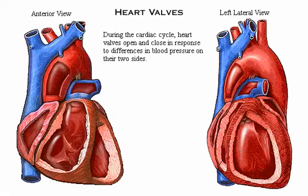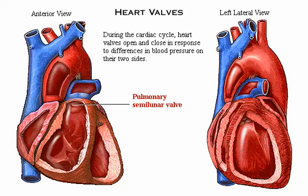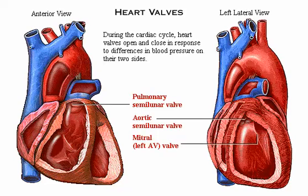During the cardiac cycle, the heart valves open and close in response to differences in the blood pressure on their two sides. These illustrations show the pulmonary semilunar valve, the aortic semilunar valve, the mitral or left atrioventricular valve, and the tricuspid or right atrioventricular valve.